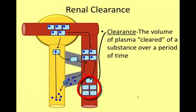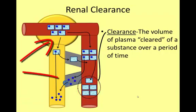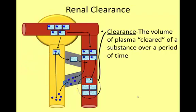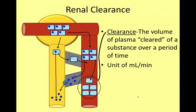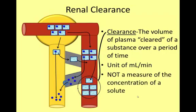In this slide we see a solute represented by a blue dot being filtered and secreted into the urine. Fluids are represented by rectangles filled with water. Clearance is defined as the volume of plasma from which a substance is completely removed per unit time, measured in milliliters per minute. Renal clearance is not a measurement of the concentration of a solute in the plasma or urine.